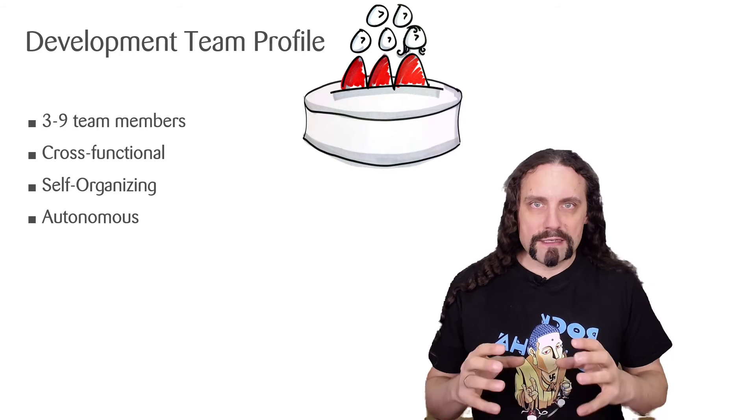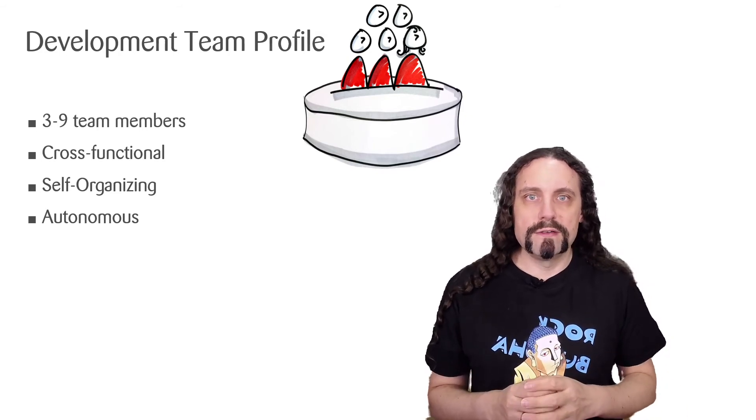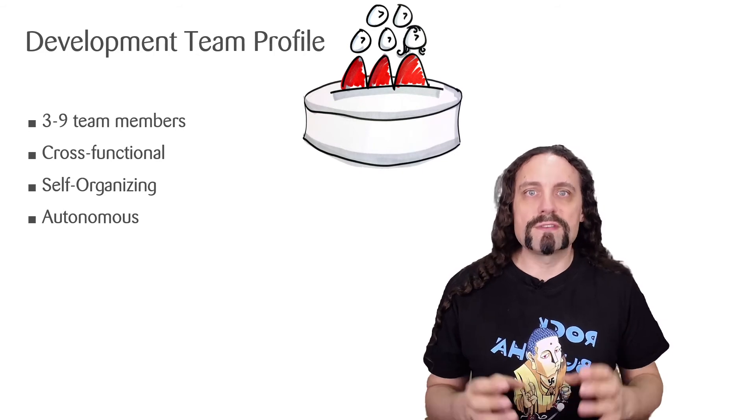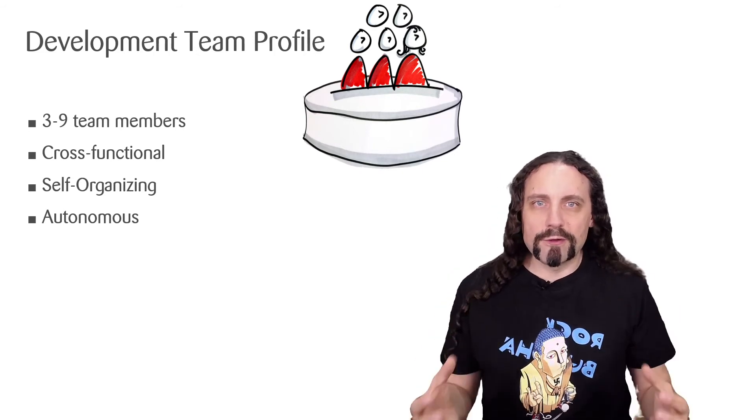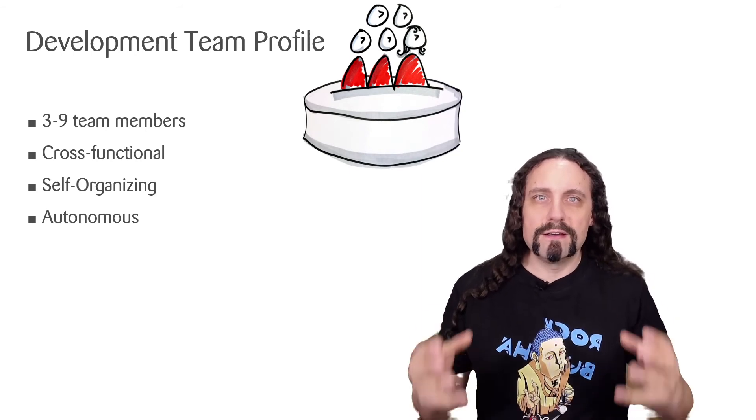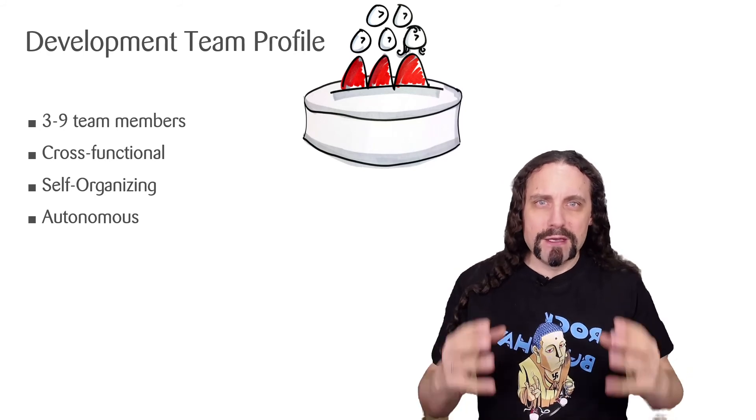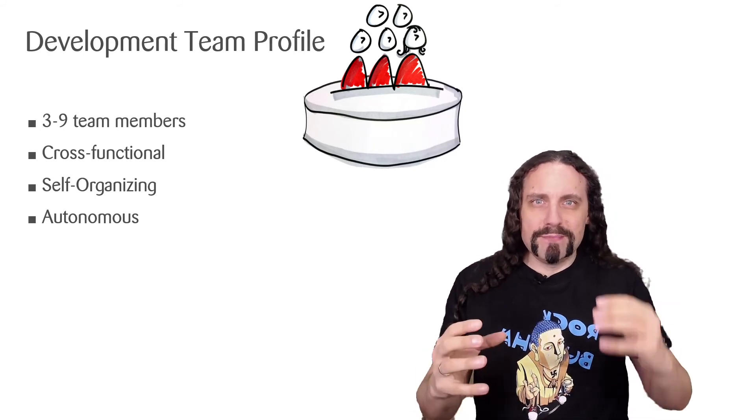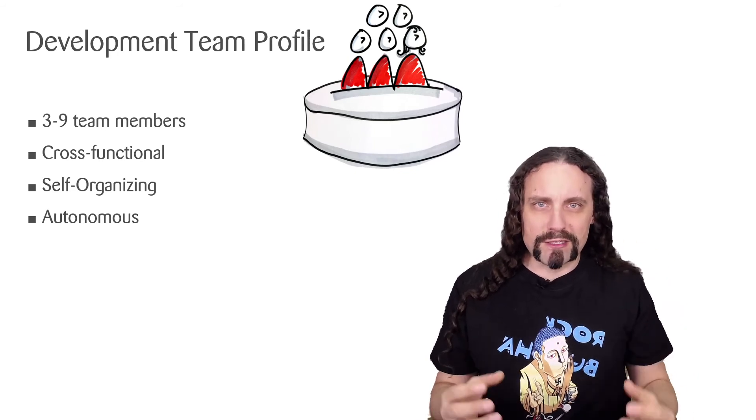They are completely self-organized and coached by a scrum master. And they are as autonomous as possible. As you can see, the development team consists of the true rock stars of an Agile team, because with them you are able to continuously deliver value to the customer.